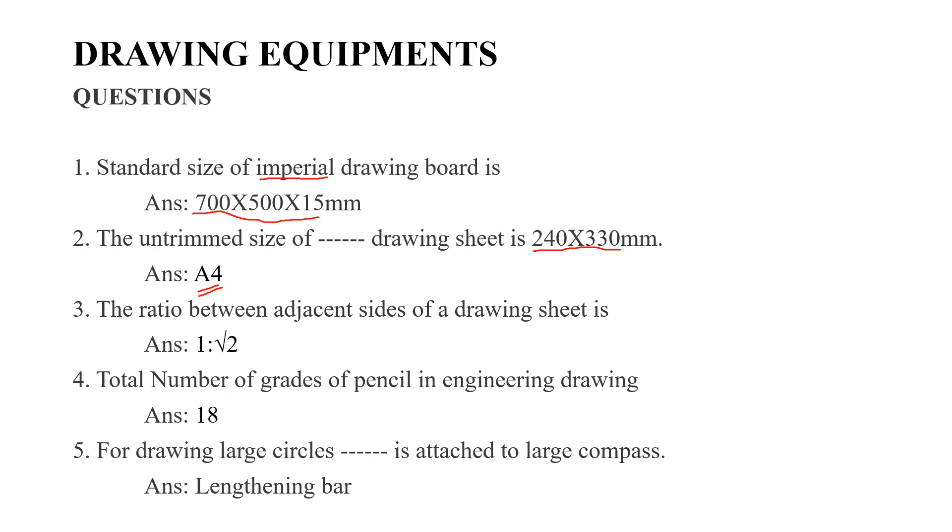Third question: The ratio between adjacent sides of a drawing sheet. The ratio is 1 is to root 2. The width to length ratio is 1 is to root 2.